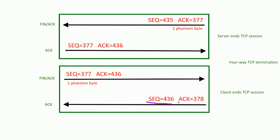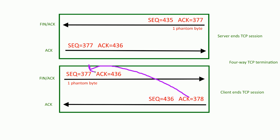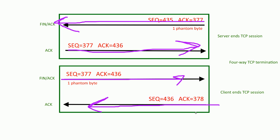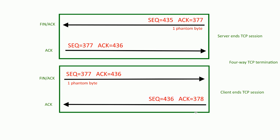The acknowledgement is 378. The reason it's 378 is because the last packet received from the client had one phantom byte — the server received the 377th byte and is now expecting the 378th byte coming back, even though this is the very end of the connection. So: FIN closes server connection, ACK acknowledges that, then the client says it wants to end its side too, and the server says okay. That's how the acknowledgements and sequence numbers go back and forth.